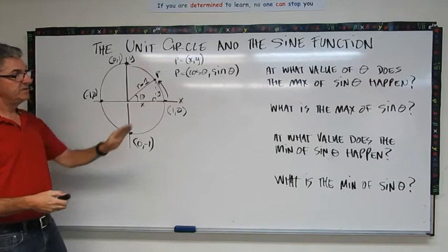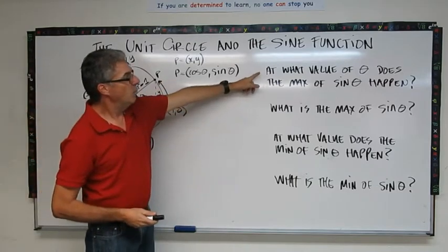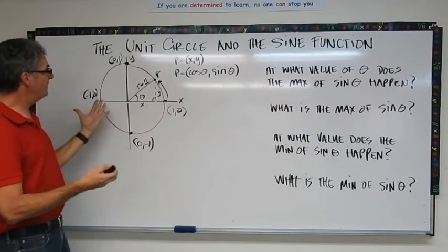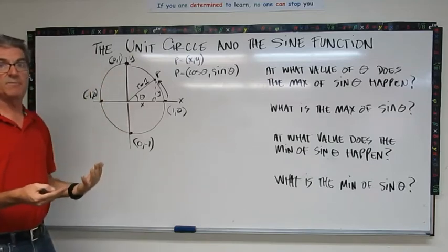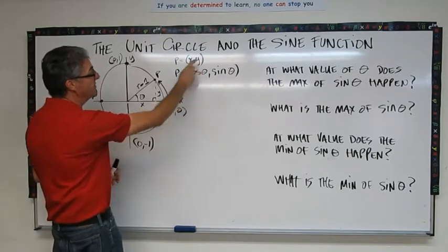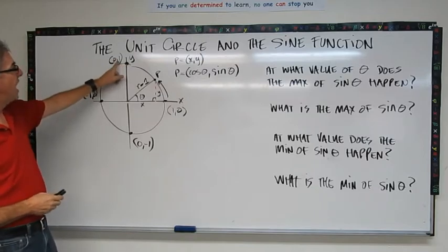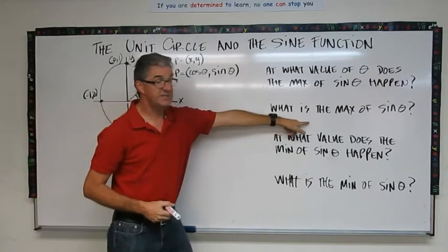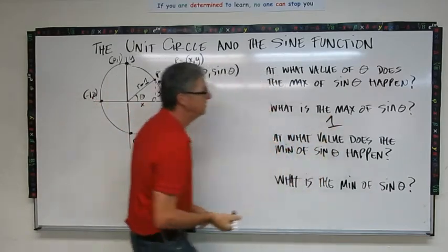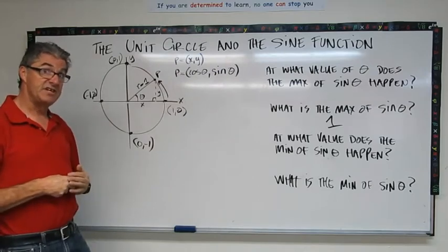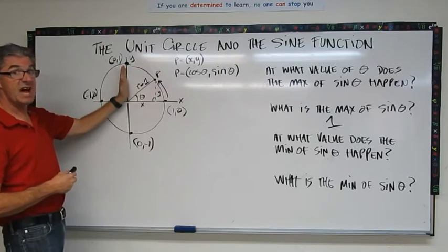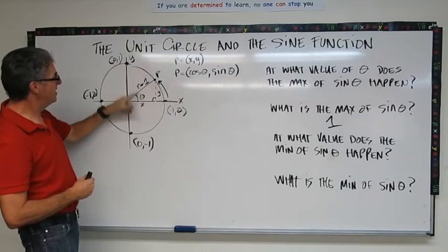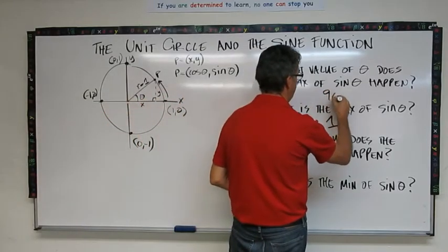So let's use these points to answer some questions. My first question is, at what value of theta does the maximum of sine theta happen? So think for a minute. First off, what's the maximum of sine theta in here? What's the biggest number you can have? Remember, sine theta is the y value, so the maximum happens here at this point, and the highest value that sine theta can have is 1. So that's the max value. And the first question was, at what value of theta does that happen? And we've rotated all the way up. That's a 90 degree rotation. Remember, the x and the y axes are at 90 degrees to each other. So to get all the way up to there, our theta is 90.